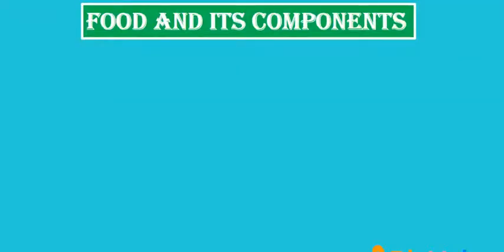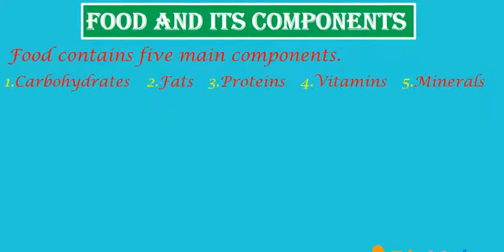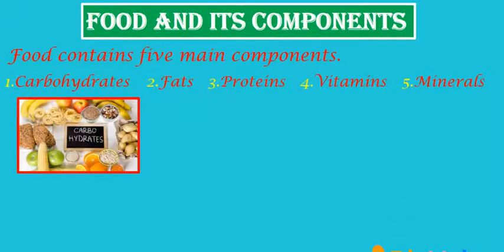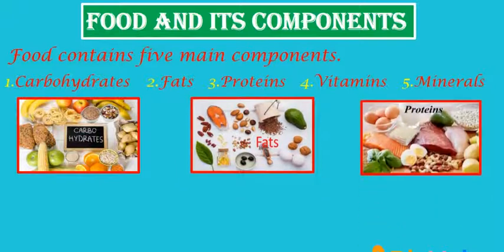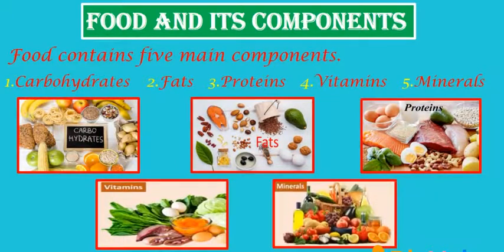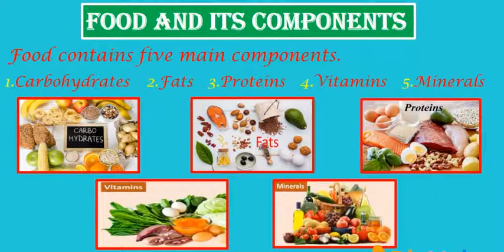Children, as you already know, food contains 5 main components. These components are carbohydrates, fats, proteins, vitamins and minerals. Our body needs all these components in adequate amounts to stay healthy. Now let's revise these 5 components of food, their functions as well as the sources from where we get them.